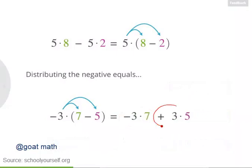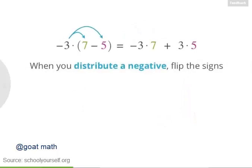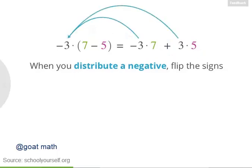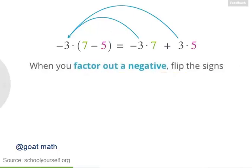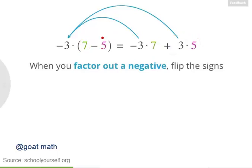So before we factor out any negative numbers, let's look at distributing negatives. If you have negative 3 times (7 minus 5), then you can distribute the negative 3. Nicely done — you get negative 3 times 7 plus 3 times 5. Why is that? Because when you distribute a negative, you should flip the signs inside the parentheses. Inside the parentheses you have positive 7, so distributing gives you negative 3 times 7. And inside the parentheses you have minus 5, so distributing gives you plus 3 times 5.